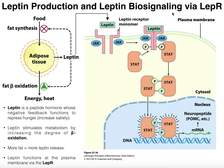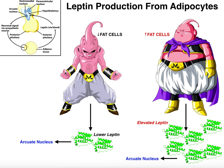Generally speaking, leptin signaling via the leptin receptor is going to upregulate genes that are neuropeptides. Some of these genes, at least in the brain, would act to decrease hunger — so increase satiety. And we'll talk about that on this slide.